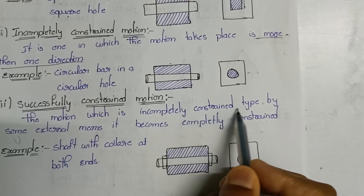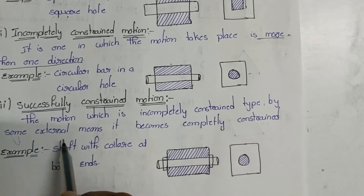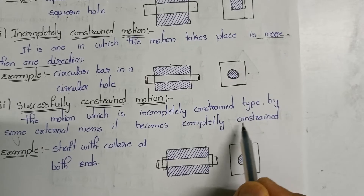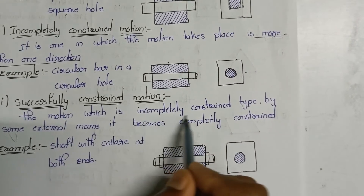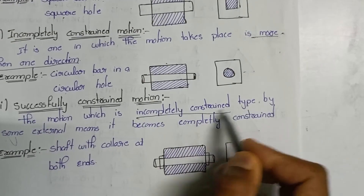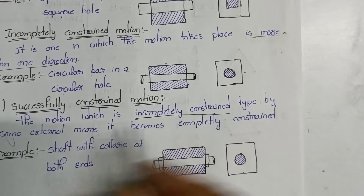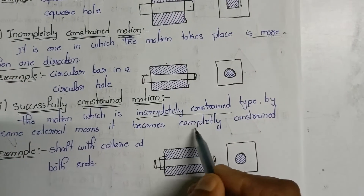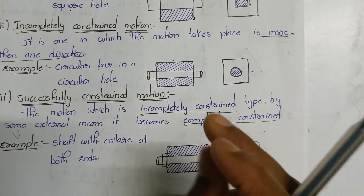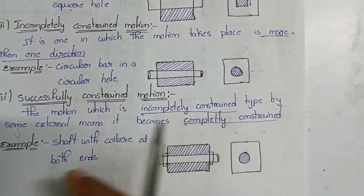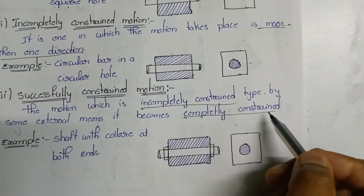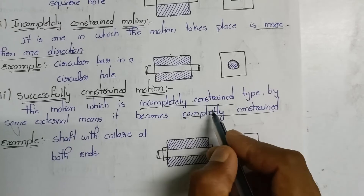Successfully constrained motion is one which is initially of incompletely constrained type, but by some external means it becomes completely constrained. The initially incompletely constrained motion is converted to completely constrained motion by adding some external instrument or arrangement.